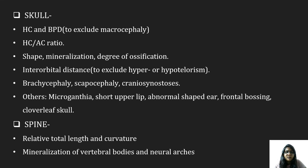In the skull, head circumference and biparietal diameter are to be evaluated to exclude macrocephaly. Head circumference-to-abdominal circumference ratio, shape, mineralization, degree of ossification, and interorbital distance to exclude hyper- and hypotelorism should be assessed. Brachycephaly, scaphocephaly, and craniosynostosis should be ruled out. Others include macrognathia, short upper lip, abnormal shaped ear, frontal bossing, and clover leaf skull.